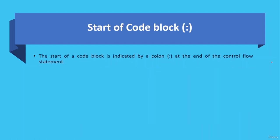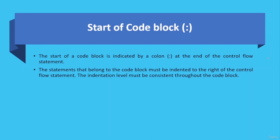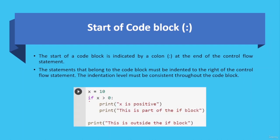The start of a code block is indicated by a colon at the end of a control flow statement. The statements that belong to the code block must be indented to the right of the control flow statement, and the indentation level must be consistent throughout the block. Here you can see the if statement with a colon at the end indicating the start of the block. The first and second lines are part of the if block with the same indentation, while the last line is outside the block.